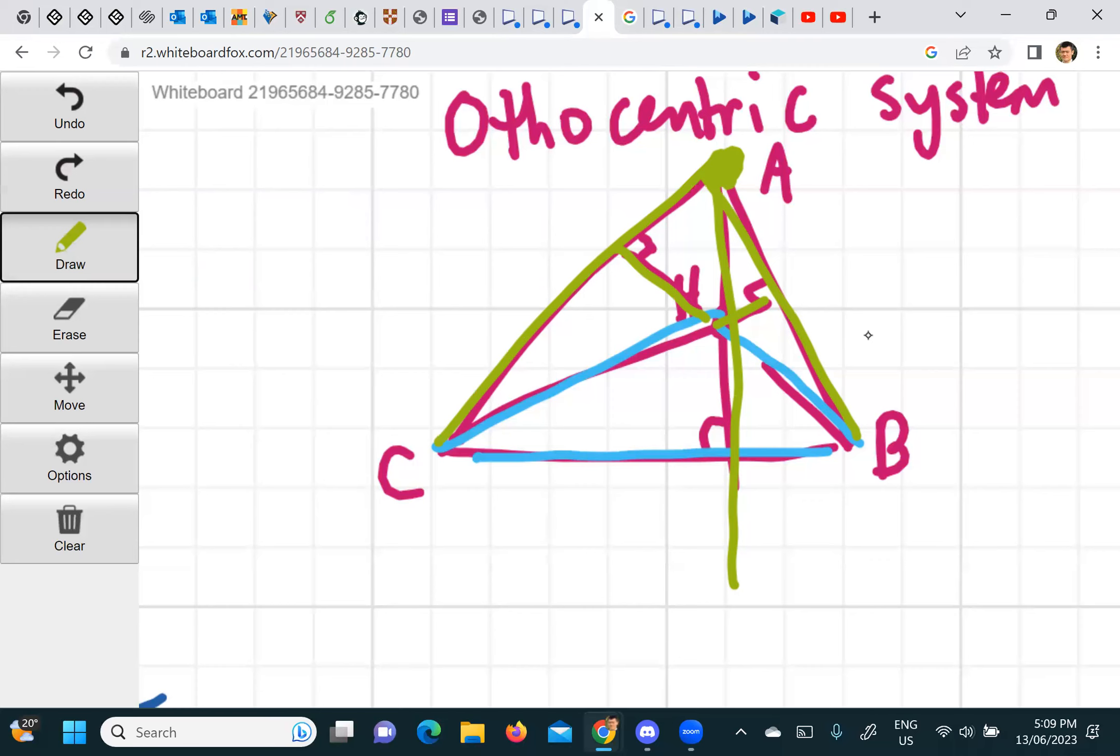So, can we check, so if we label this D, E, F, yeah? DEF is called the orthocentric triangle, yeah? Of ABC, yeah? But can we also check that DEF is the orthocentric triangle of AHB, for example, or HCB? So it should be the orthocentric triangle of all the four things in the orthocentric system, yeah?